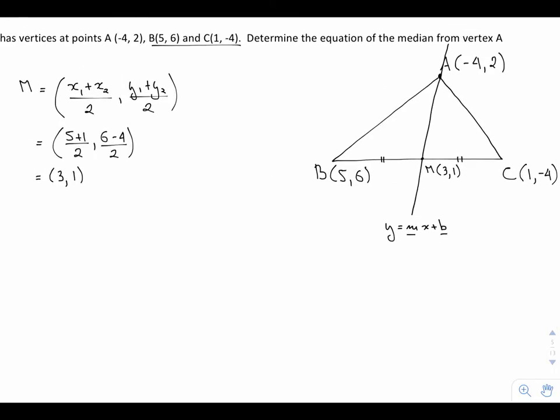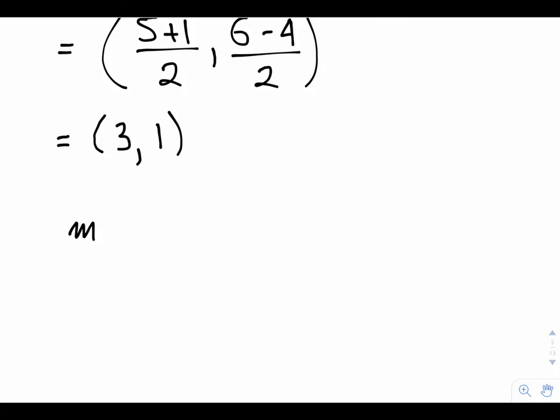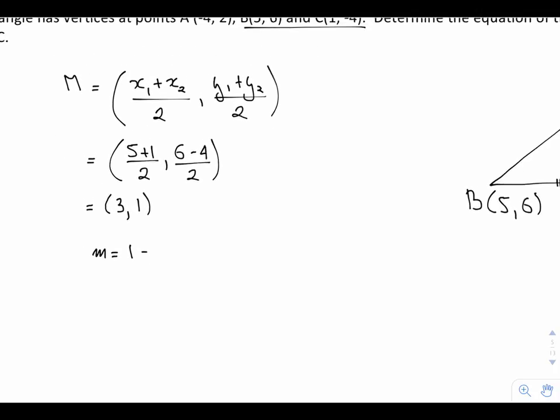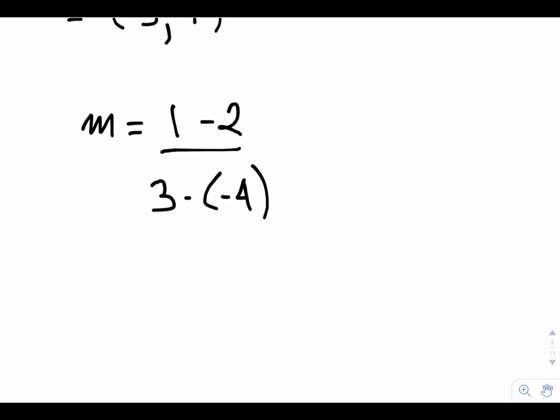I have A, I have M. My slope is given by the equation M equals Y2 minus Y1. So I'll have 1 minus 2 over 3 minus negative 4. What do I end up with here? Let's do the math. So I get negative 1 over 7.